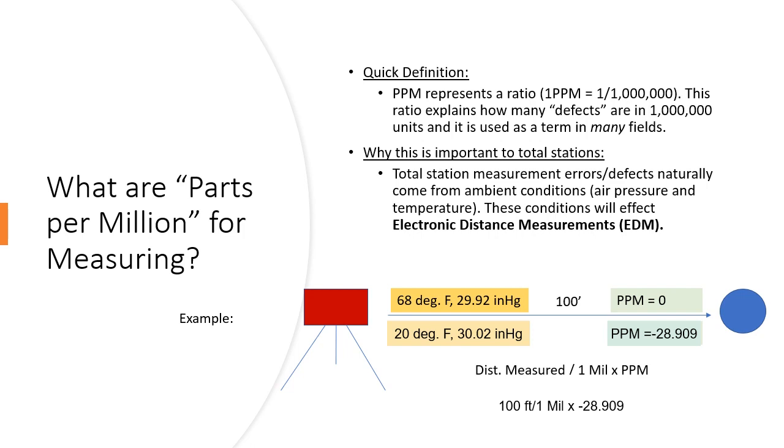This will give me the distance that the total station would have read that distance if I did not compensate for that error. 99.997 feet.